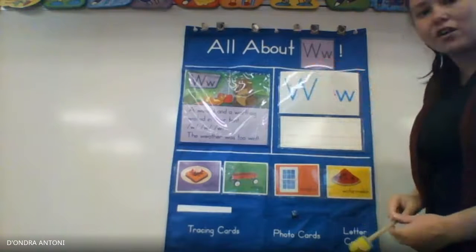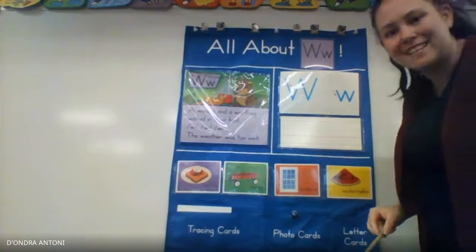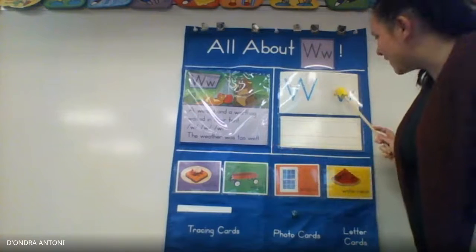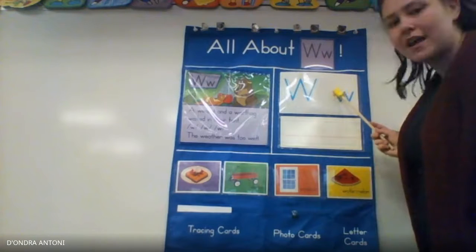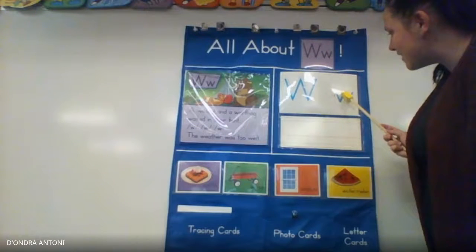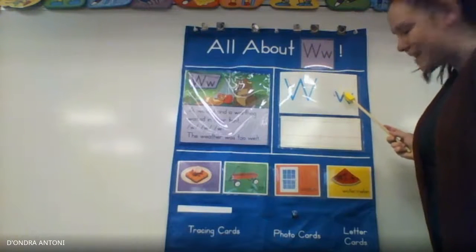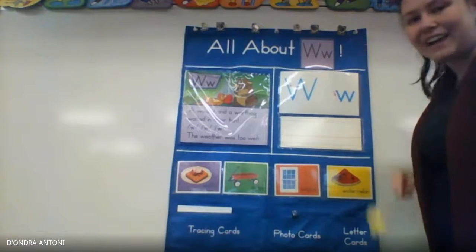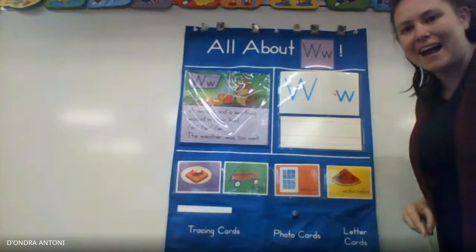Now let's write our lowercase W. We're gonna start at the top and do a diagonal line down, diagonal line back up, diagonal line down, and diagonal line back up.